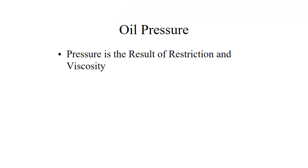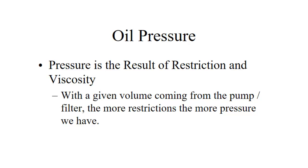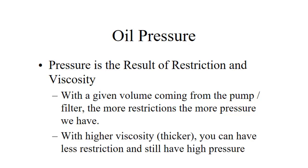Oil pressure is the result of restriction and viscosity. The pump provides a certain volume of oil — if it went straight out an open pipe there would be very little pressure, but when routed into an engine oil system there are all sorts of restrictions and pressure builds up. That's what we see on our oil pressure gauge in the cockpit. With higher viscosity — thicker oil — you could have fewer restrictions but still have higher pressure because it's harder to force the oil through.